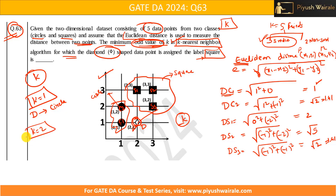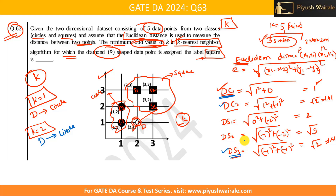When k = 2, the two nearest neighbors are DC1 (distance 1) and either DC2 or DS3 (both distance sqrt(2) ≈ 1.41). If we take C1 and C2, both belong to circle, so D is labeled circle. If we take C1 and S3, we have a tie — one circle and one square — so we cannot classify. Either way, k = 2 does not yield a square label.